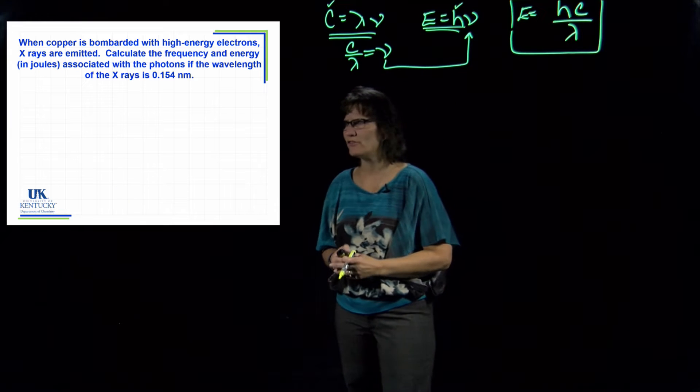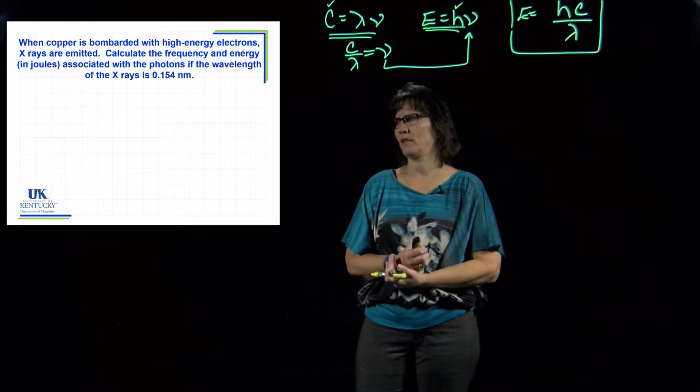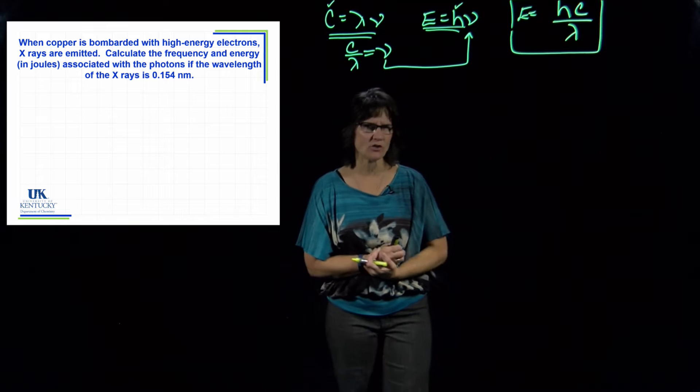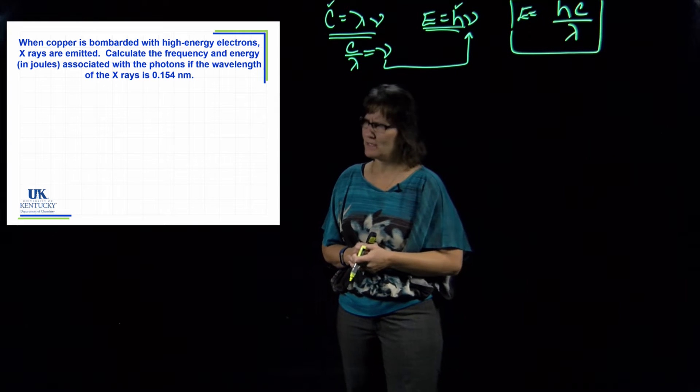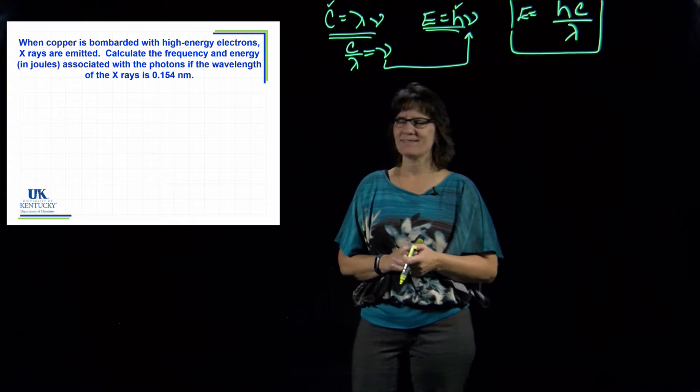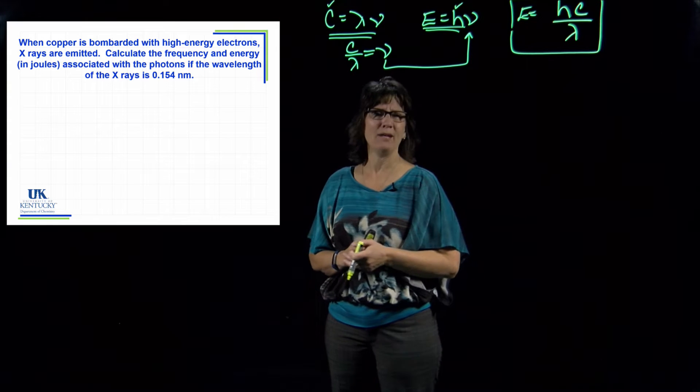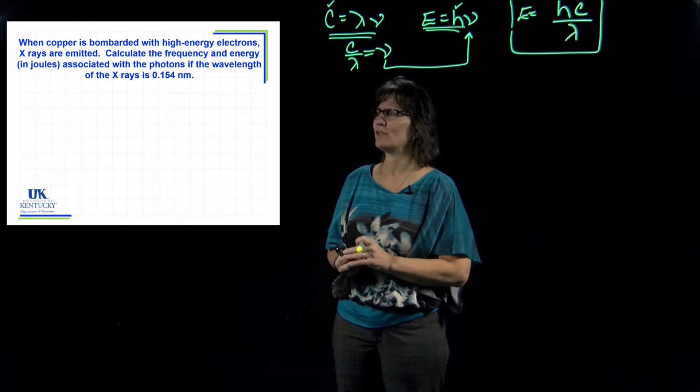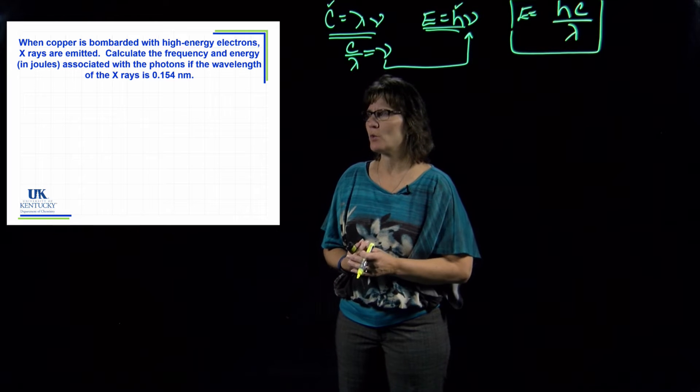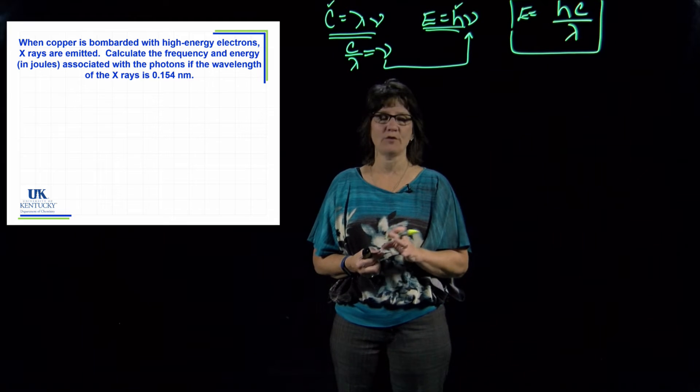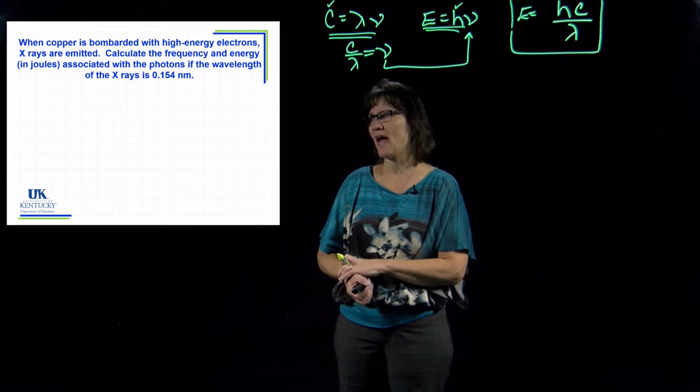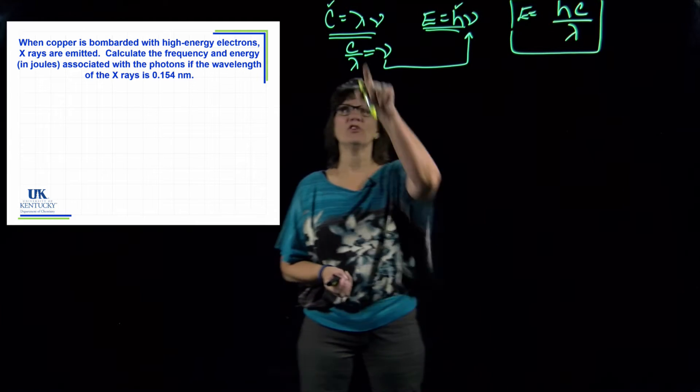So here's a typical problem with this. We've got some x-rays, and x-rays are down in the high energy short wavelength area. It does have a short wavelength—less than one nanometer, and one nanometer is tiny. In this question it wants to know the frequency and the energy in joules associated with a photon of light that has that wavelength.